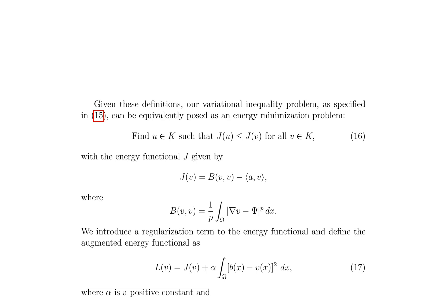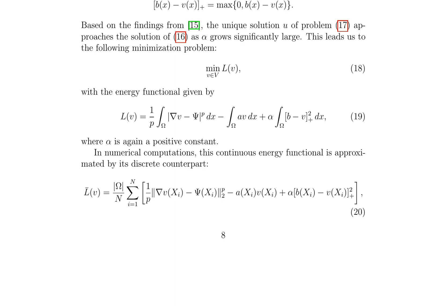The energy functional J is defined as J(v) equals b(v,v) minus a(v), where b(v,v) is a p-Laplace-type term. A regularization term is introduced to the energy functional, leading to the augmented energy functional L(v) equals J(v) plus alpha times the integral over omega of (v(x) minus v(x))^2 plus dx. Based on previous findings, the unique solution u of the regularized problem approaches the solution of the original problem as alpha grows large.